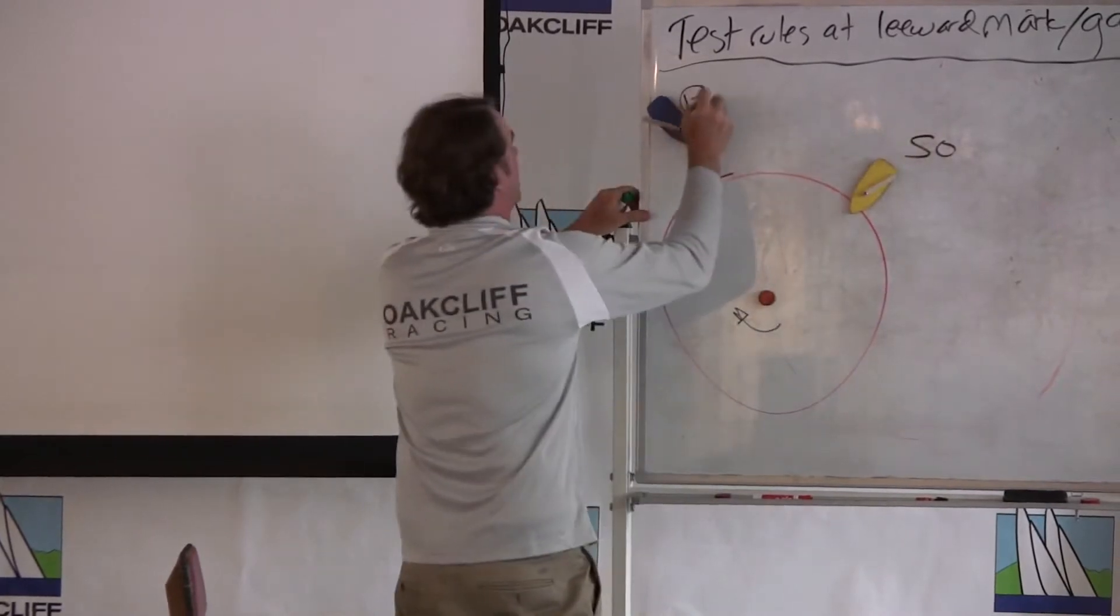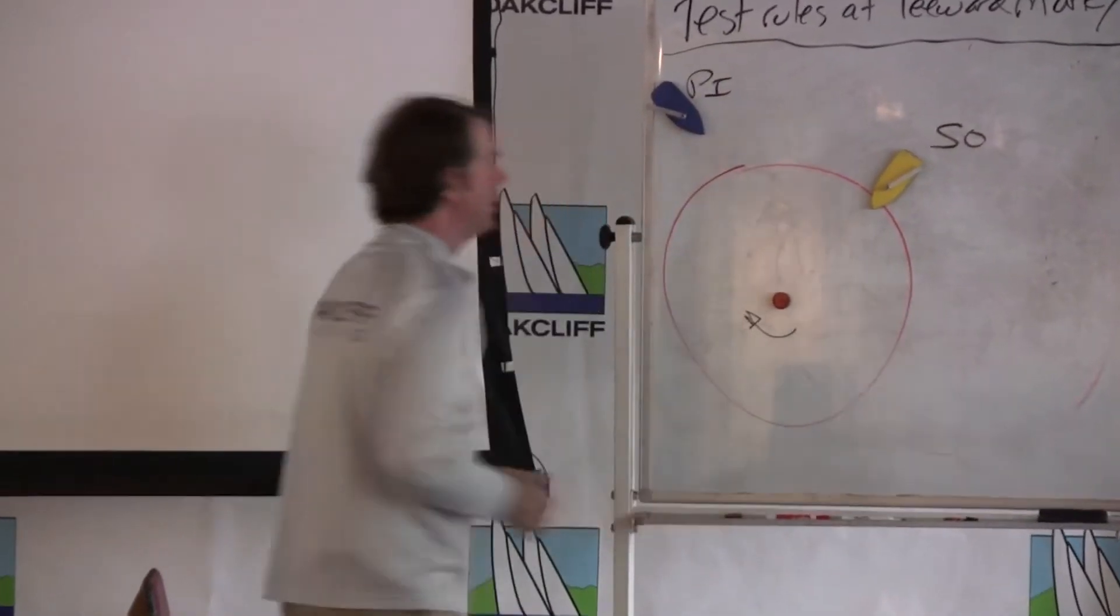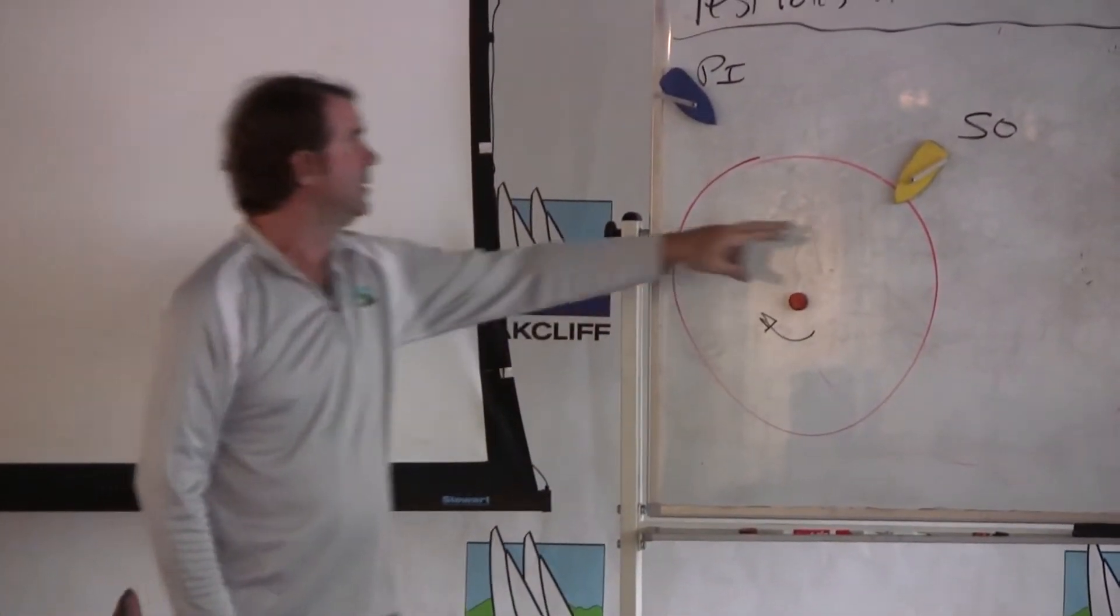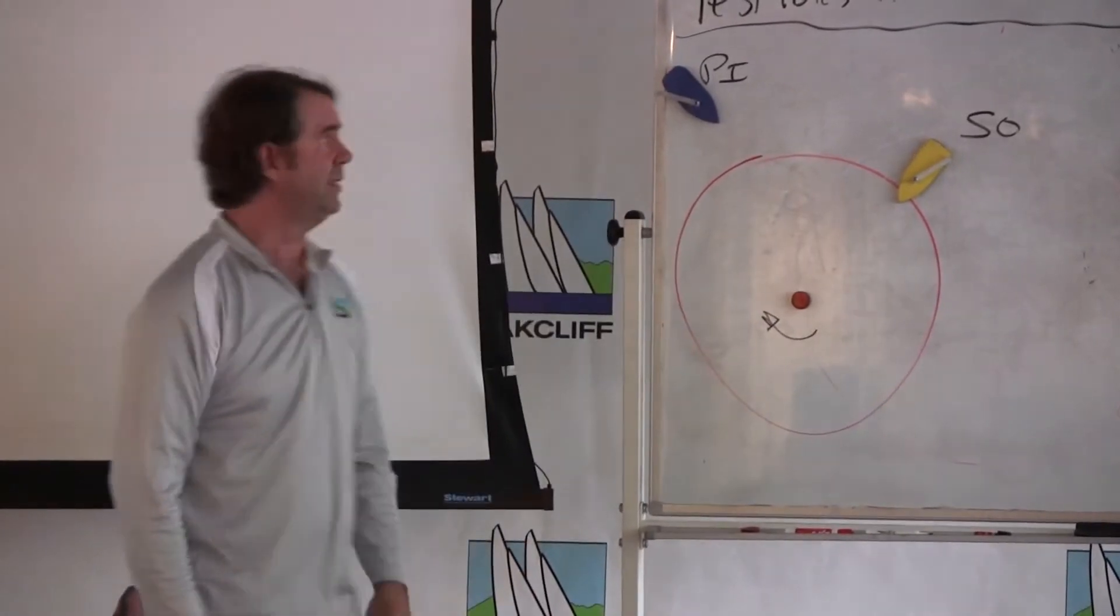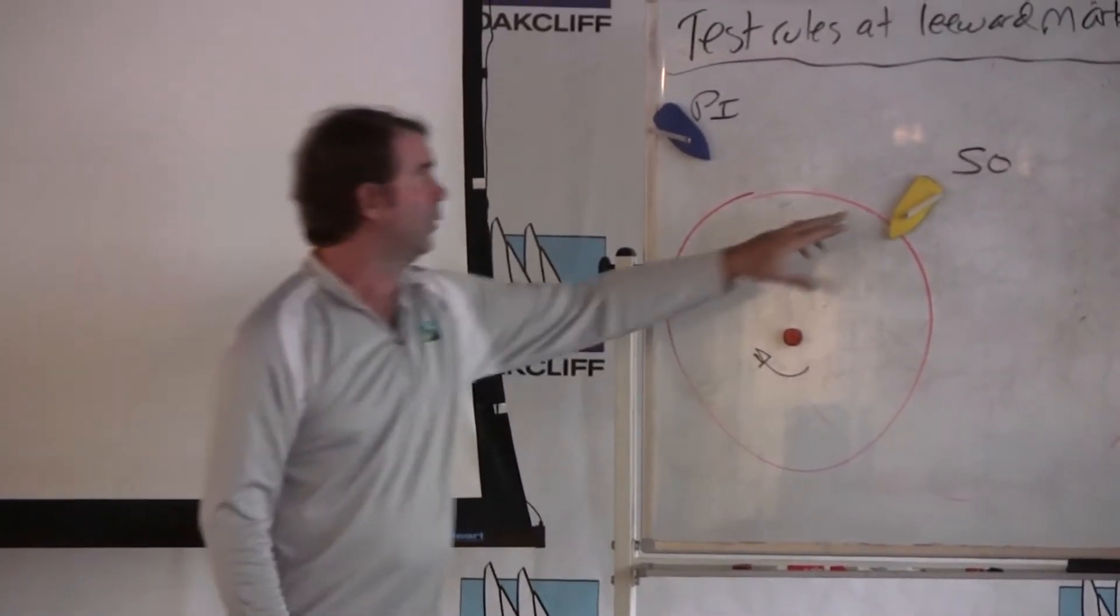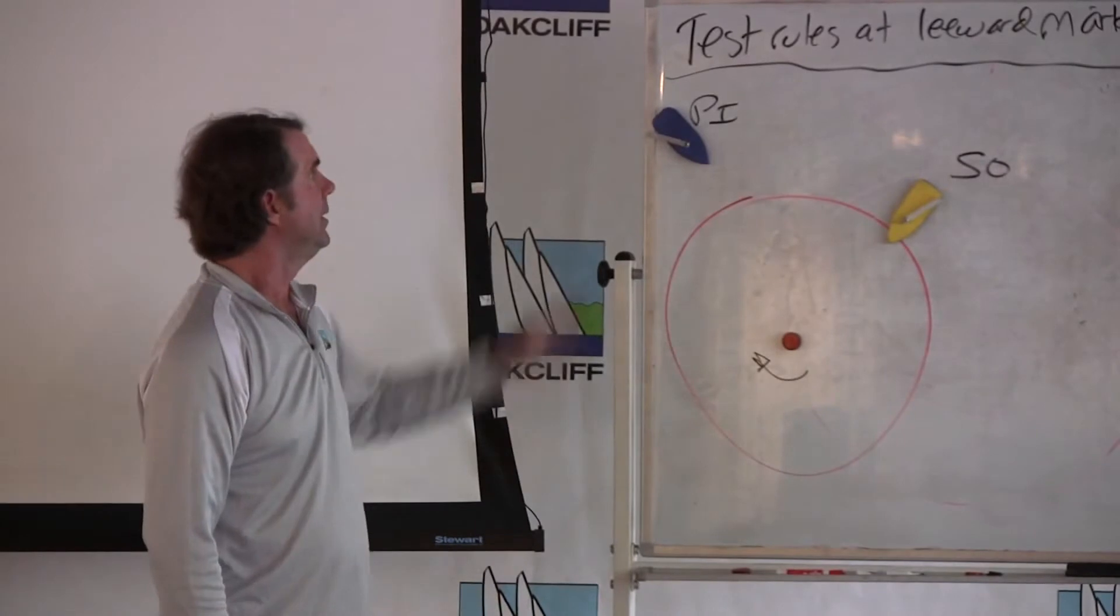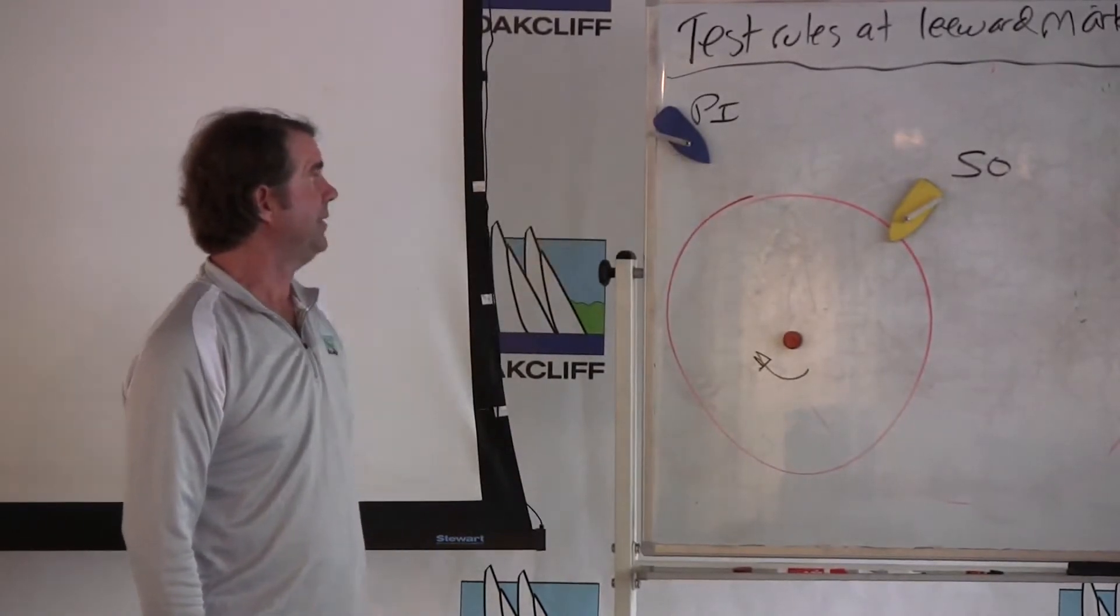Starboard on the outside, port on the inside. So clearly, the first boat in turns 18 on. Ask the question, are they overlapped? Clearly the boats are overlapped. PI is the inside boat.